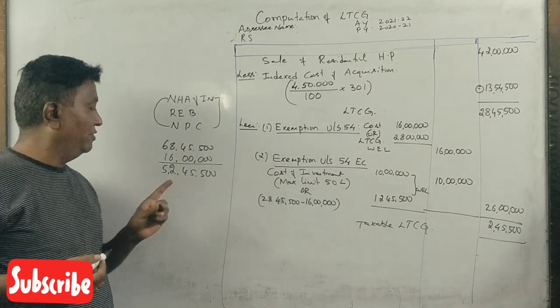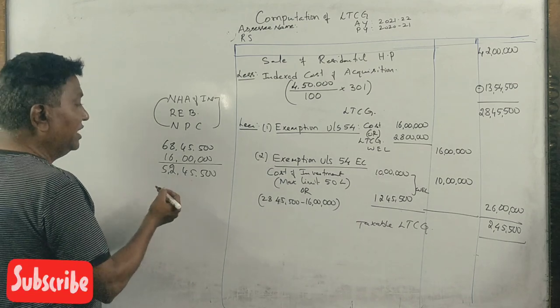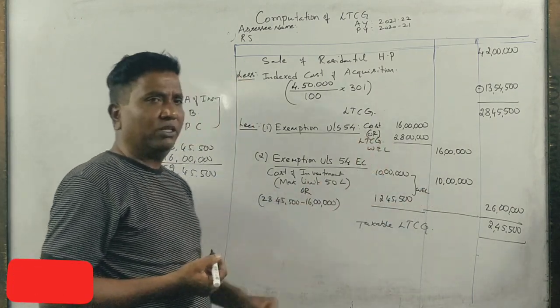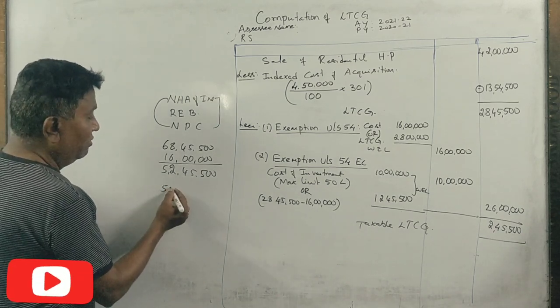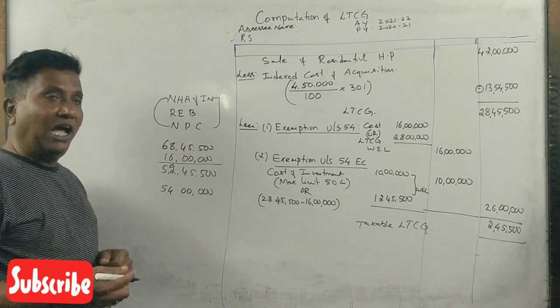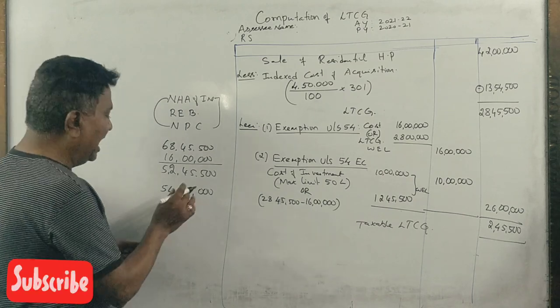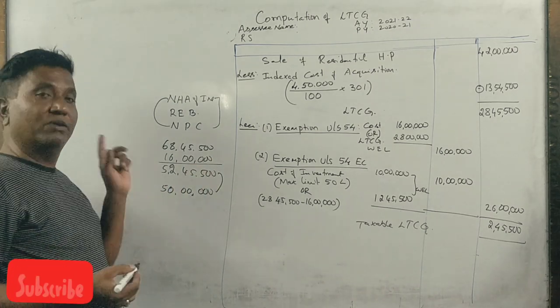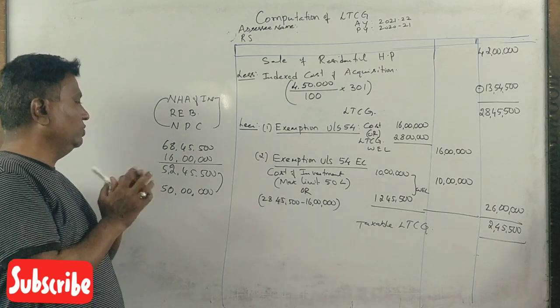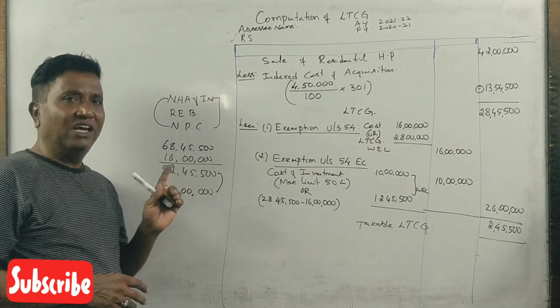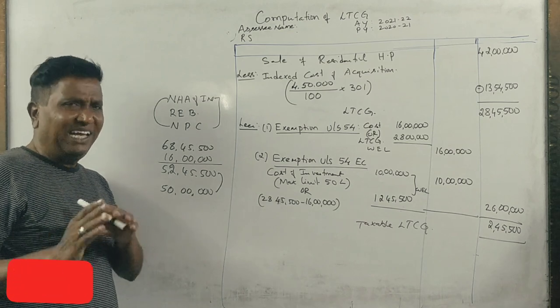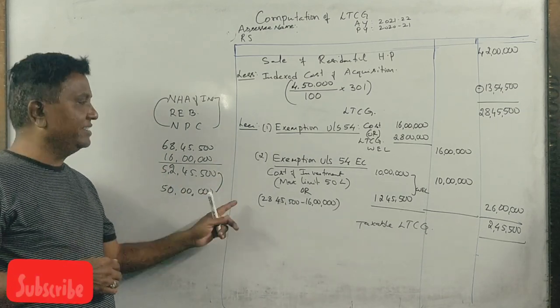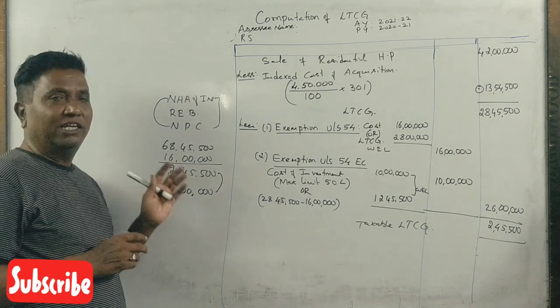If investment is 10 lakhs, exemption is 10 lakhs. The remaining becomes taxable. So I hope you understand - maximum limit is 50 lakh rupees for Section 54 EC. If your long-term capital gain is below 50 lakh rupees, you will get full exemption under section 54 EC. Clean health code is very important.